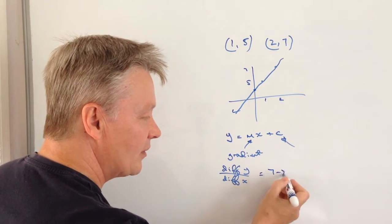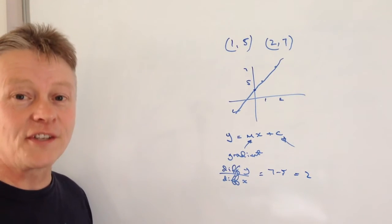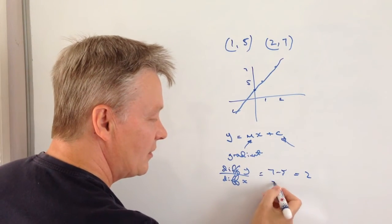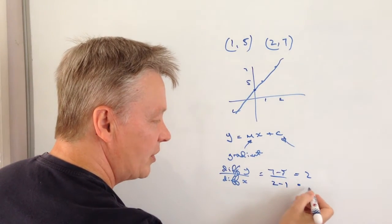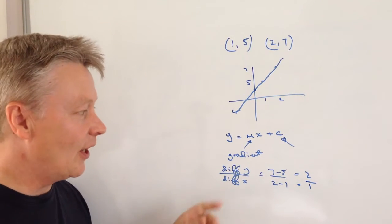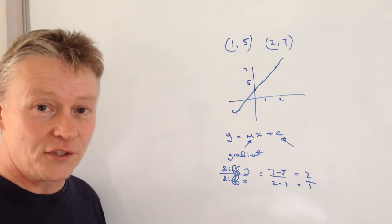So therefore the difference in the y values is going to be 7 minus 5 which equals 2, and the difference in the x values is 2 minus 1, which equals 1. So in other words, the gradient of this particular line is the value of 2.